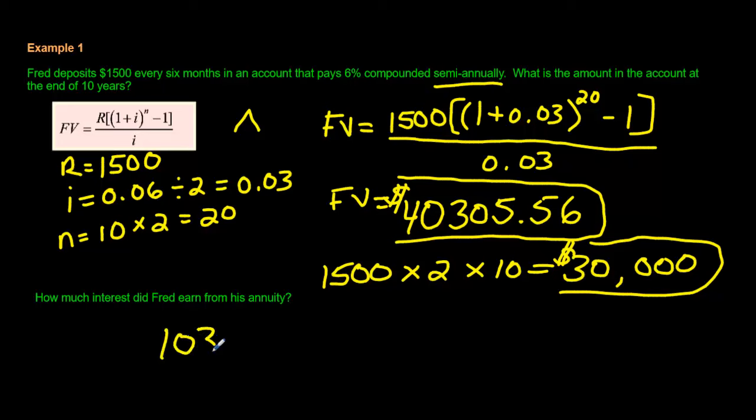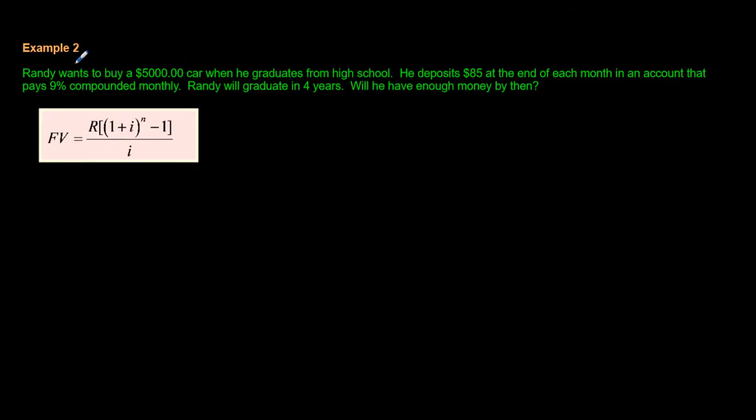Under his bed, he made this amount. If you subtract those two numbers, that is how much extra money he made by putting it in the bank. That is how much interest he made. How much interest did Fred earn from his annuity? All you do is subtract these two numbers. And then you would have your answer. I'm just going to write it down right here. By putting it in the bank, he had $10,305.56. That's pretty good. It was worth it for him to put it in the bank. Let's do one more question and then we're done.